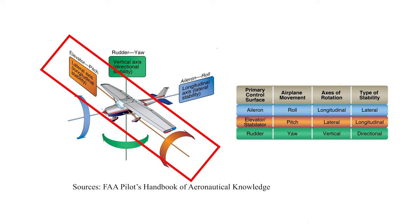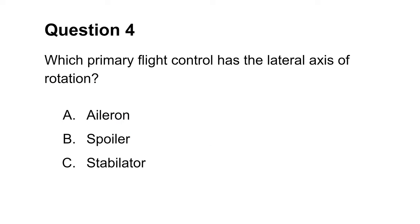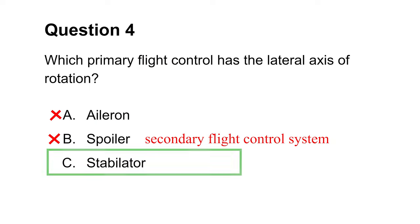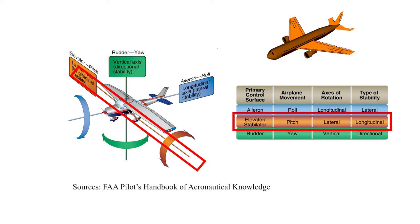The next question wants to know which flight control has the lateral axis of rotation. We can immediately rule out choice B. Spoilers are secondary flight control systems. Choice A is incorrect either. Aileron provides the banking movement. This means that the airplane rotates along its longitudinal axis. Choice C is the correct one. Stabilator provides upward and downward movement called pitching. As the airplane's nose dives down or up, it does so over its lateral axis.